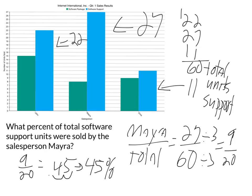So again, number one we evaluate the chart. Number two, we jump into the question and read carefully — it says software support units, not all units, but total software support units, referring only to the blue column. From there we go ahead and do our math.